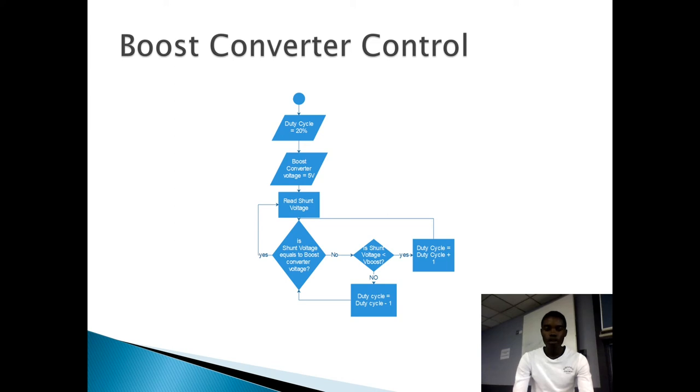So we compare it with the output voltage, we compare it with 5 volts. If it's less than 5 volts, we have to increase the duty cycle. If it's greater than 5 volts, we have to decrease the duty cycle so that the output voltage is kept constant at 5 volts.